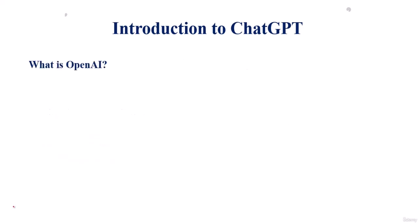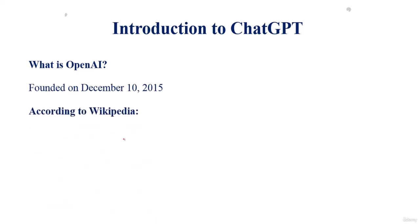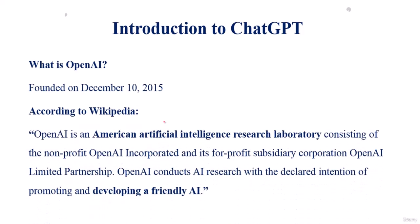In this class we'll discuss what is OpenAI. OpenAI is an American company whose mission is to develop and invent different digital products based on artificial intelligence for humanity. ChatGPT is one of its products. It was founded on December 10, 2015. According to Wikipedia, OpenAI is an artificial intelligence research body in America, consisting of the non-profit OpenAI Incorporated and its for-profit subsidiary OpenAI Limited Partnership. OpenAI conducts AI research.